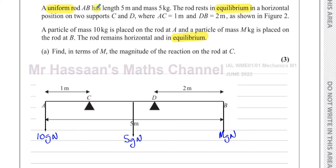We also have the two supports at C and D, so we're going to have a reaction at C and a reaction at D, which are unknown - RC and RD.